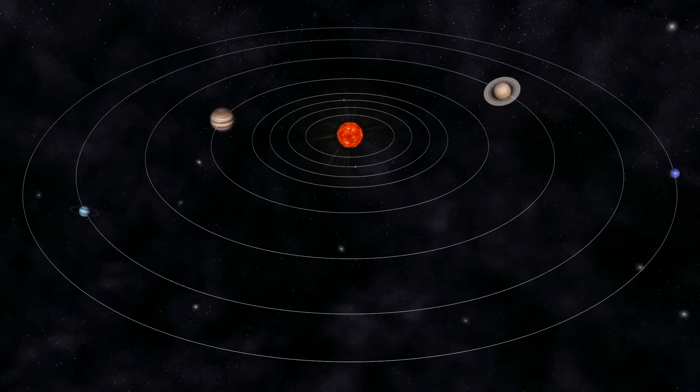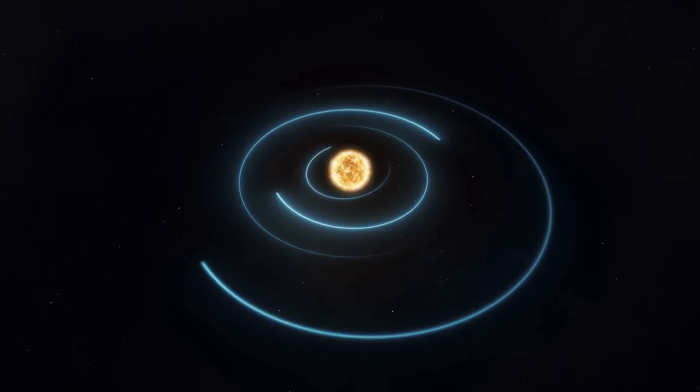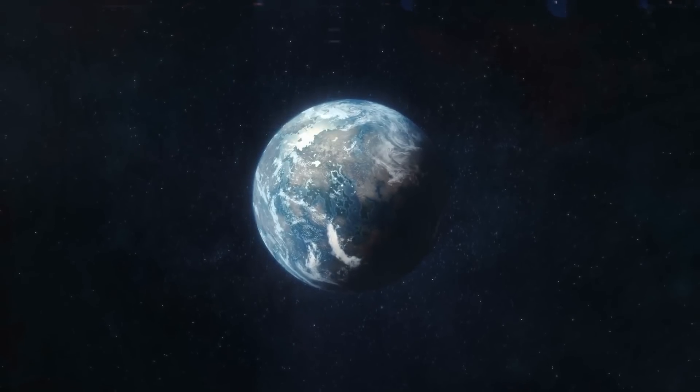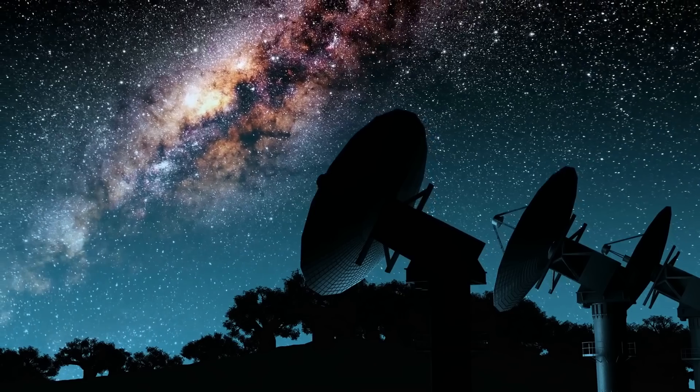Imagine if Earth were much closer to the sun. So close that an entire year would only last a few hours. So close that gravity has locked one hemisphere in permanent searing daylight and the other in eternal darkness.